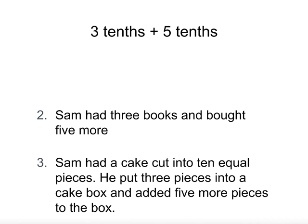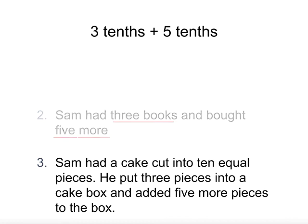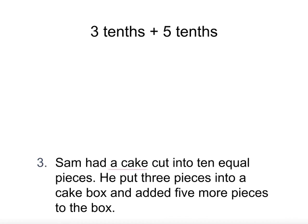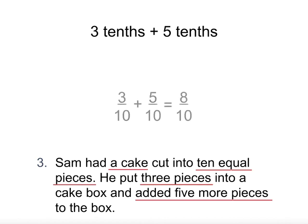The next one says three books and five more — this is just three plus five, so it doesn't match the fraction aspect of the story. The third option has a whole cake cut into ten equal parts, so this means tenths. He put three pieces into a box and adds five more pieces, so this one matches our story. In symbols, it looks like this.